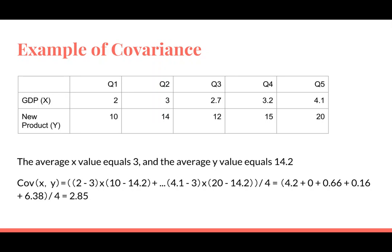Here's an example of covariance using the GDP for a company and comparing it against a new product from that same company, and the answer was found to be 2.85.